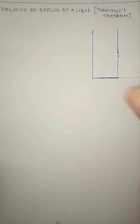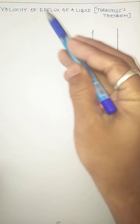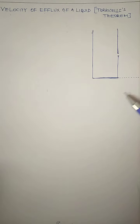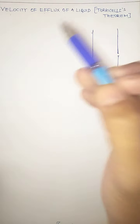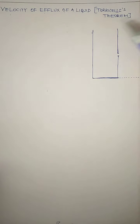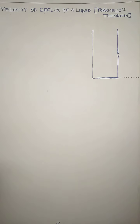This small hole is also called an orifice. The flow of any liquid through a very small hole or narrow opening when the liquid is contained in a vessel is called velocity of efflux. The velocity of efflux is also determined using Bernoulli's theorem, and this application was explained in the form of a theorem proposed by Torricelli, one of the scientists who also made a simple barometer to measure atmospheric pressure.